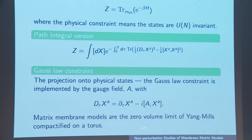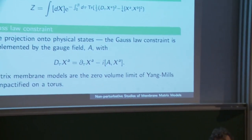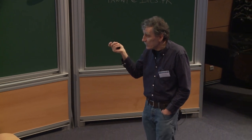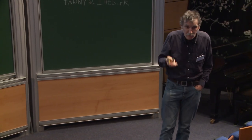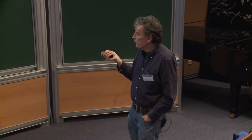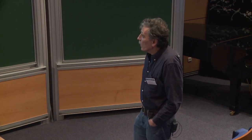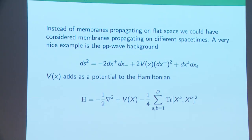One can think of these bosonic matrix models as a dimensional reduction of Yang-Mills theory. If I take Yang-Mills theory in p spatial dimensions, I'll be left with just one covariant derivative — the commutators in the other directions are the only things that survive. We get this as the zero-volume limit of Yang-Mills on a torus. This gives us a hint that the bosonic case is going to be captured by the glueball physics of Yang-Mills theory, and indeed one gets massive degrees of freedom.